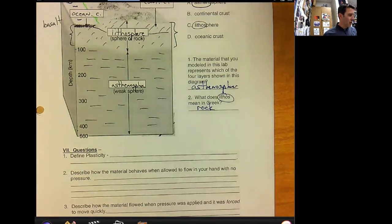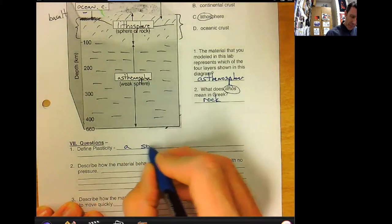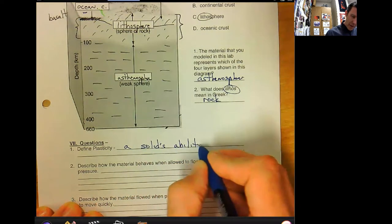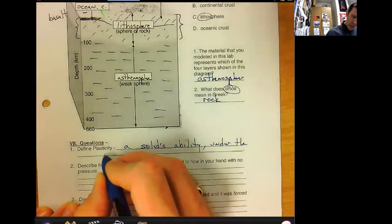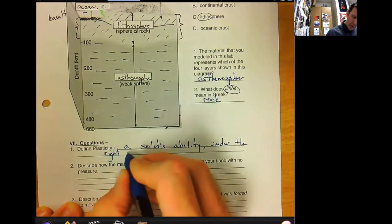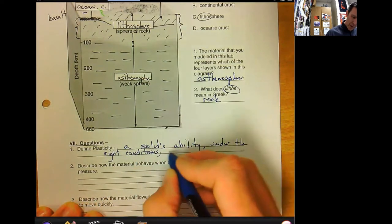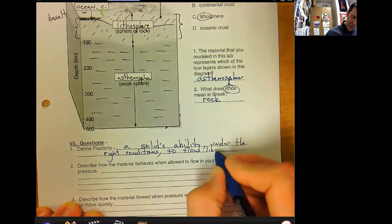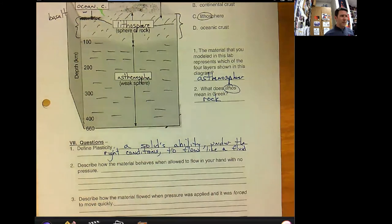Jump down to the questions. Define plasticity. A solid's ability, under the right conditions, to do what? To flow like a fluid, like the produce bag that I was talking about. Elastic is different than plasticity.